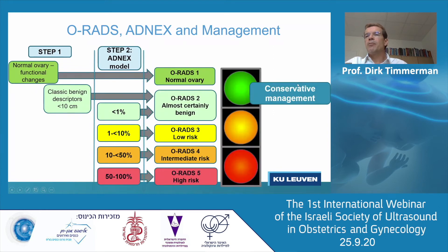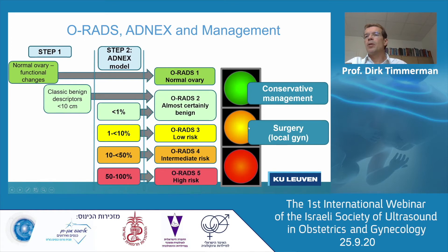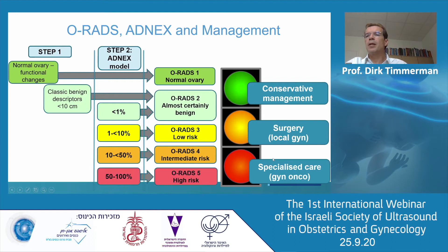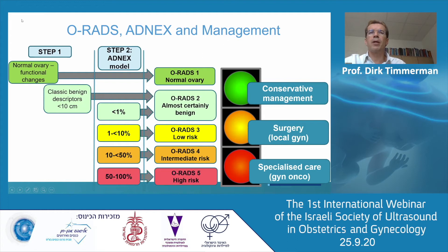You then apply the traffic light system. If it's green, go for conservative management if the patient has no symptoms; with symptoms, go for surgery. If it's orange, it can be managed by the local oncologist. In the red case, refer the patient to specialized oncology care. ORADS 4 is a little in between — in the Netherlands they prefer not too many false positives given limited oncology capacity, so ORADS 4 goes to the local gynecologist. In many other countries, ORADS 4 and 5 go to specialized gyne-oncologist care because survival is better.